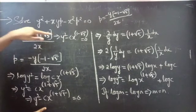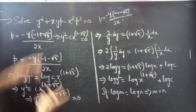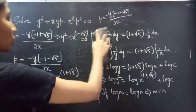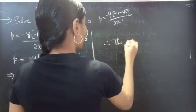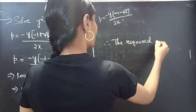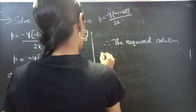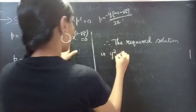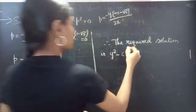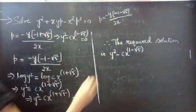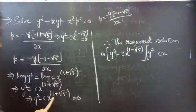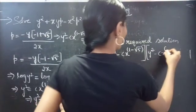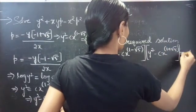The combination of these two solutions gives the required solution for the given differential equation. Therefore, the required solution is: [y² minus c·x^(1 minus √5)] · [y² minus c·x^(1 plus √5)] equals 0.